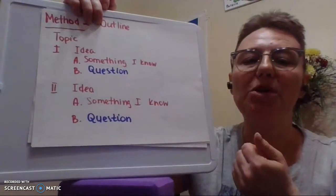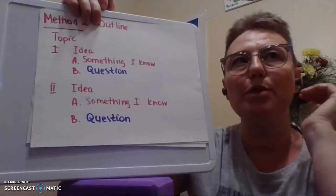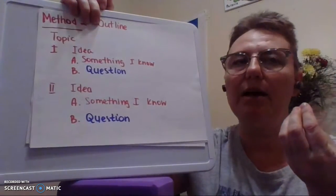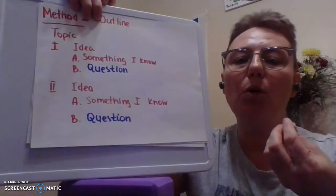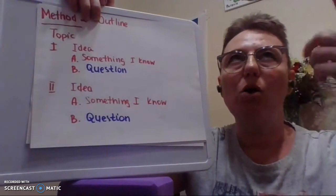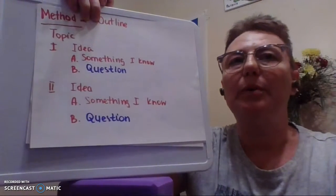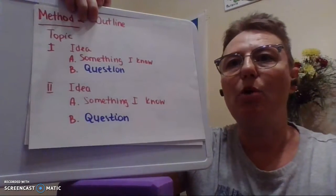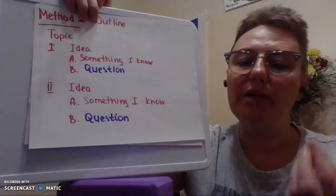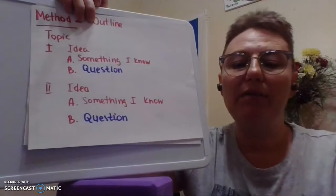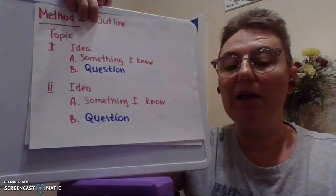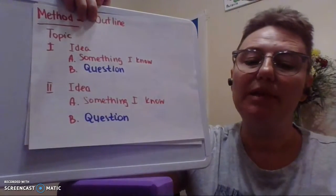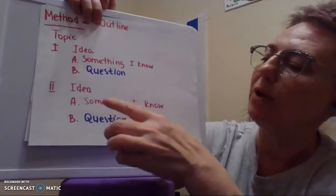You would label your topic up here and then you will start with Roman numeral one. That will be an idea. Then perhaps something you know, it will be A, goes under Roman numeral one, something I know about B, perhaps a question I know about an idea. If you have another idea, you can bet it too and perhaps you have a question about that. There is something I know, but I have a question about that, something I know. So you can put a little I here so that you can write that question and you will continue until you run out of ideas.